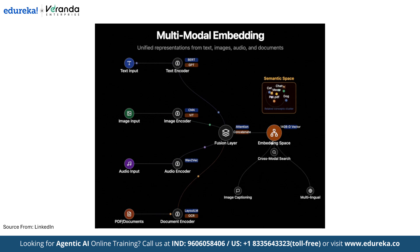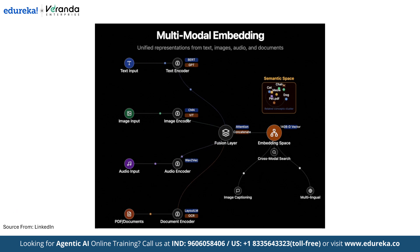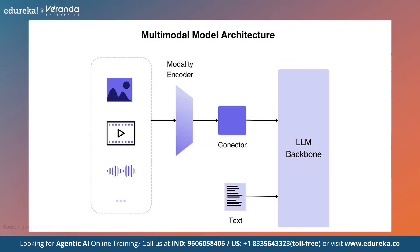Next is the Fusion plus Reasoning layer, where a multimodal transformer uses cross-attention to connect relationships across text, images and audio. For example, it links the word 'red' to the red region of the car image. Finally, in the output generation stage, the model generates a response — which could be text, a caption, an image like DALL-E, or even sound.